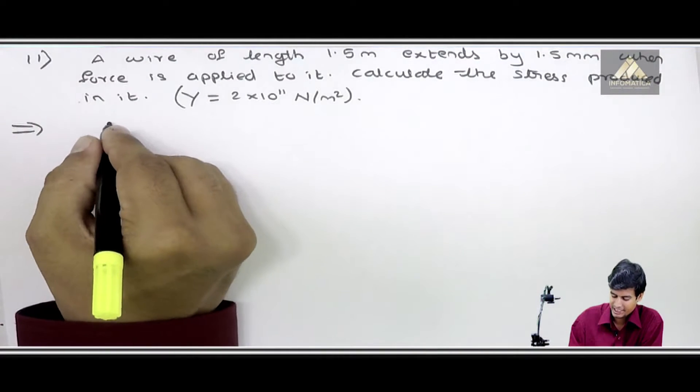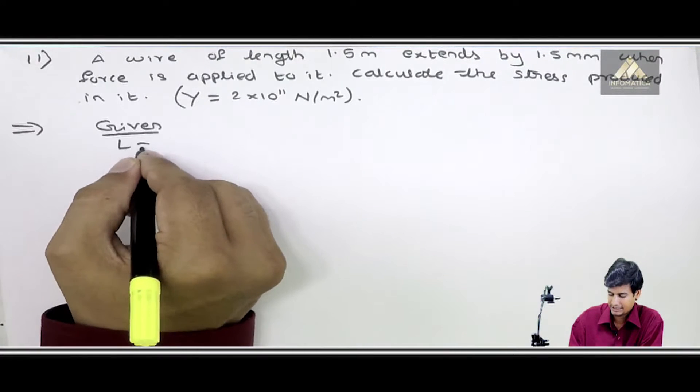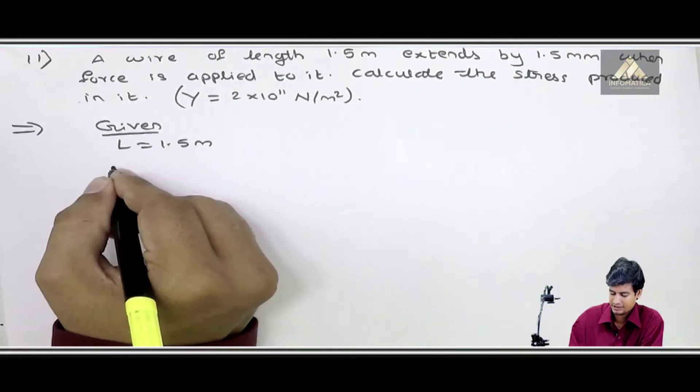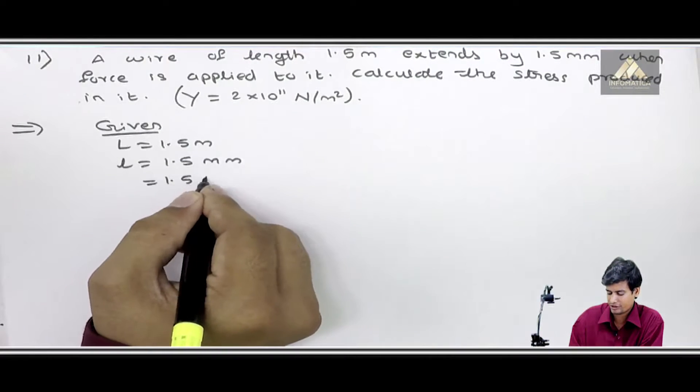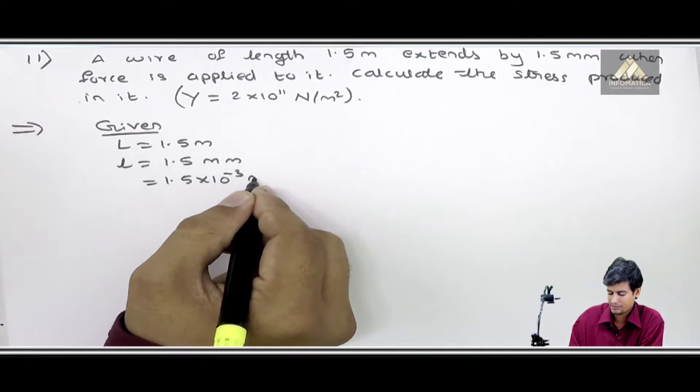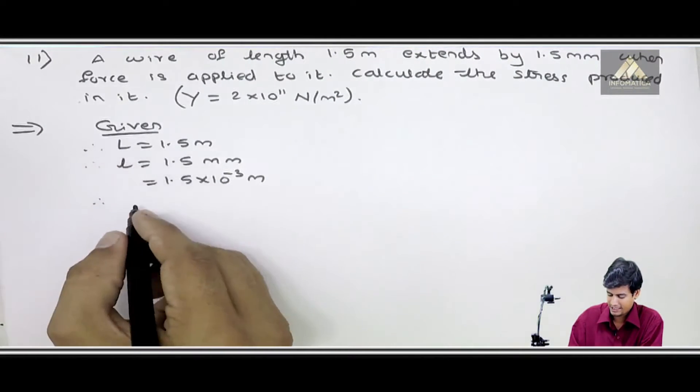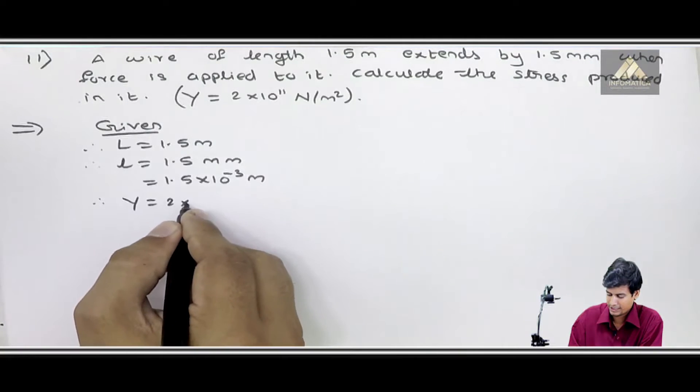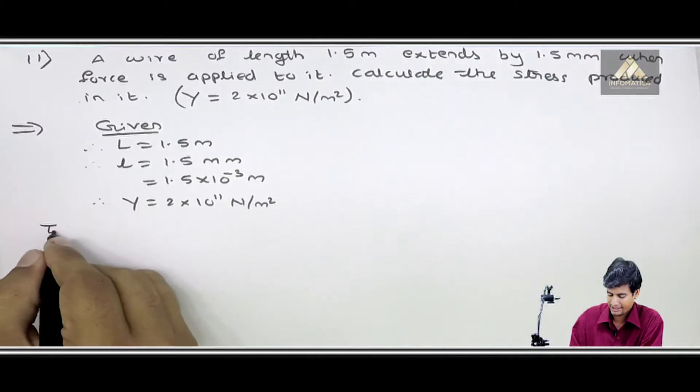First of all, given terms: capital L = 1.5 meter, small l = 1.5 millimeter, which converts to 1.5×10⁻³ meter. Next, Y = 2×10¹¹ newton per meter square. To find: calculate the stress.